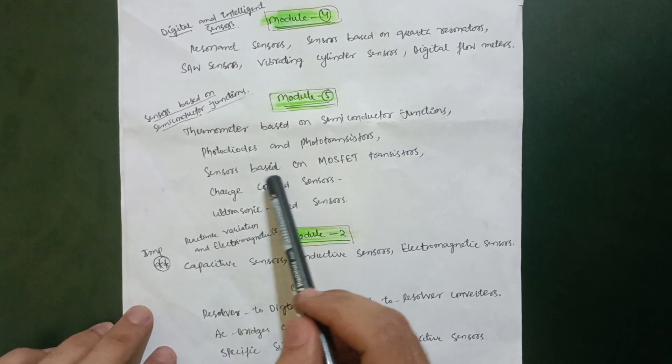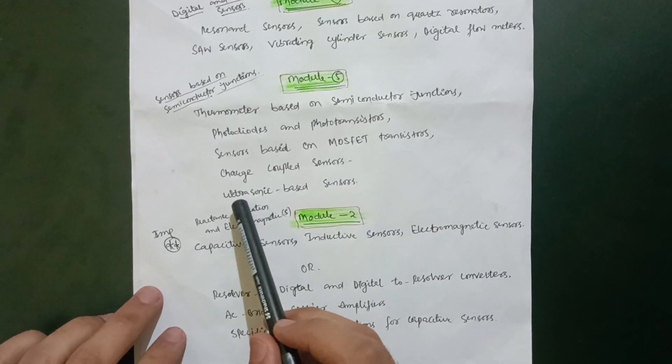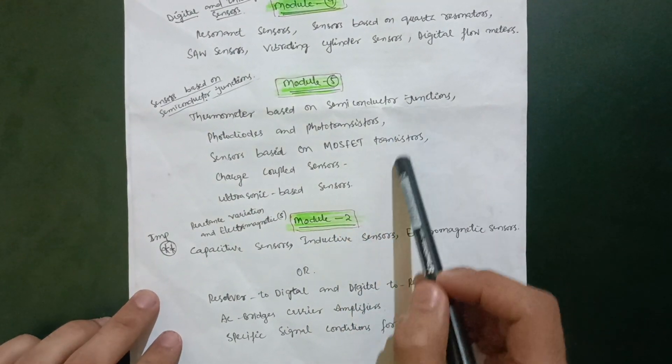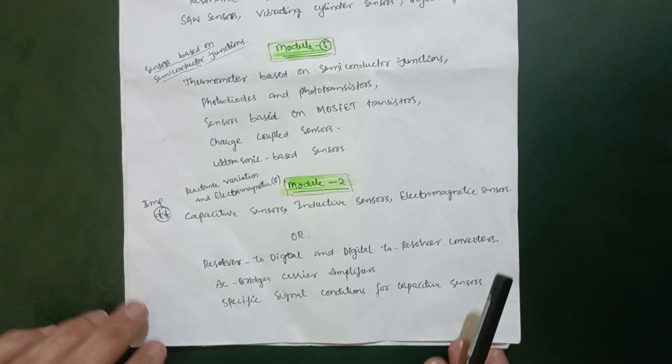Sensors based on MOSFET transistors, charge-coupled sensors, and ultrasonic-based sensors. Go through these five topics in Module 5 so that you can easily score in this particular module.